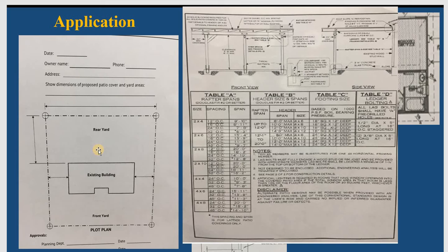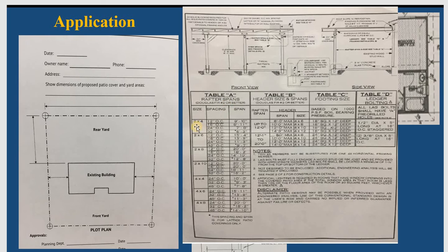If you do the wood one, you can follow the guideline right here about the rafter. This is the minimum span from the rafter and the header. For example, you need the header and what size you need to use for that. You have many options — it depends on how much you use and how big the patio is. The footing, the header, and the rafter — it has many choices for you to select which one fits your design.